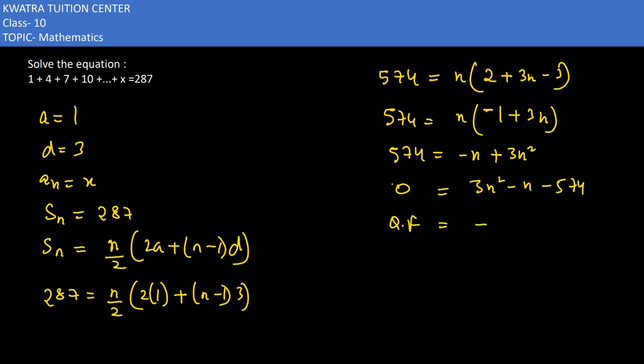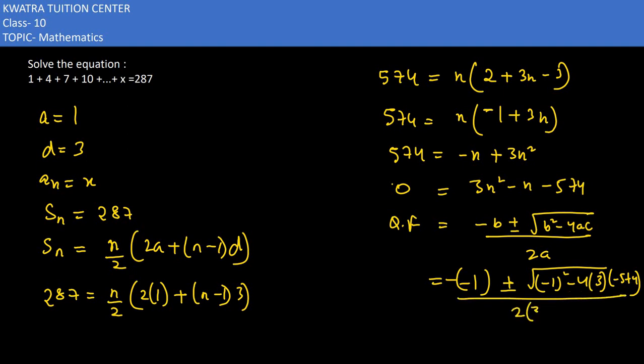The formula which is minus b plus minus root b square minus 4ac over 2a. We substitute b which is minus 1, plus minus root, b square is minus 1 squared. 4 times a, a is 3, c is minus 574. In division you have 2a, 2 into 3 is 6.